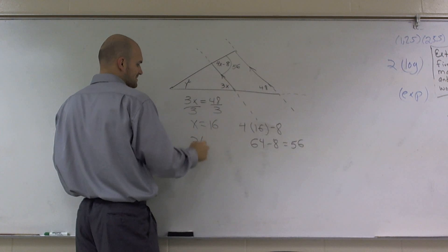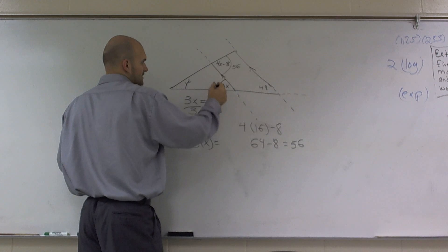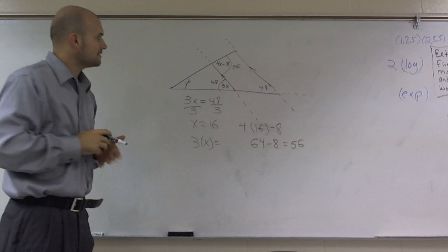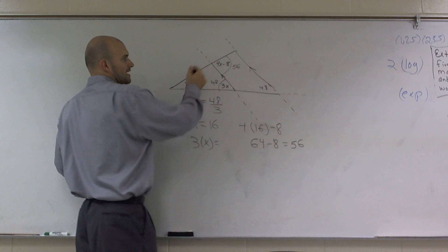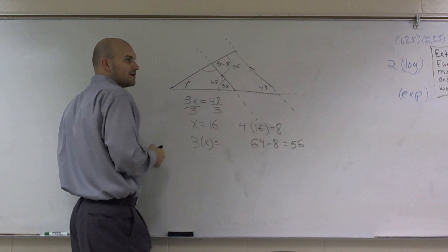This angle is 3 times x, which again is, actually we already figured that out, which is 48. All right. Well, here's the other part. I see here's a straight angle. If one side is 56, what is going to be this other angle?